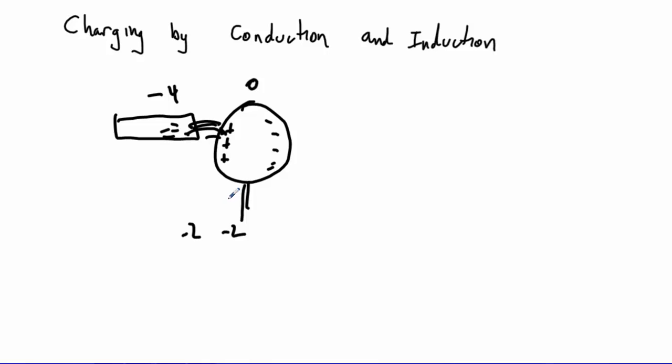The overall amount of charge hasn't changed, it's just been redistributed. And then when we take this piece back away, this thing ends up with a minus two charge and this thing ends up with a minus two charge. So both objects now have a charge.